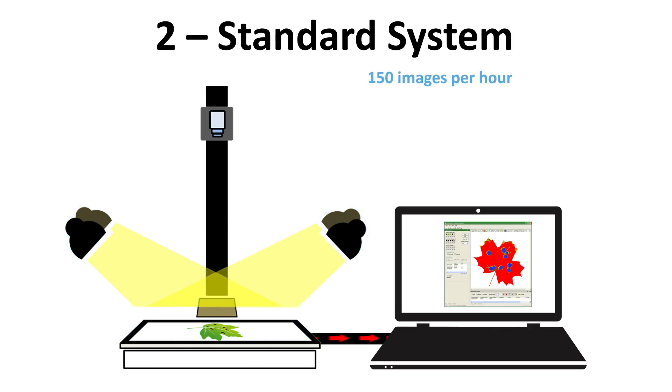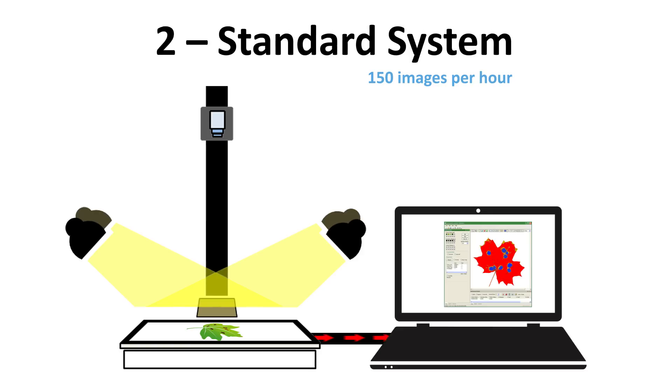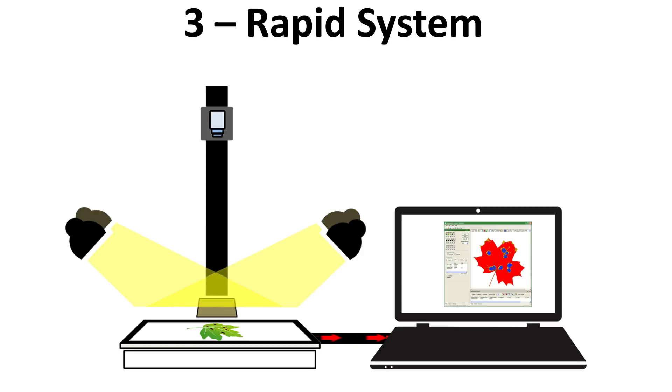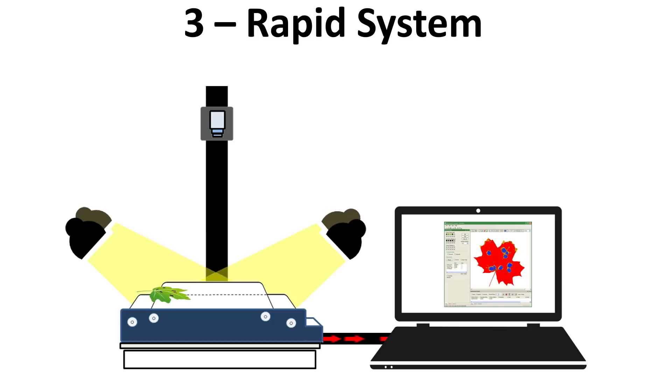It can process around 150 leaf images per hour. The rapid system adds a conveyor belt unit to the standard system, raising the number of leaves processed to around 800 per hour.